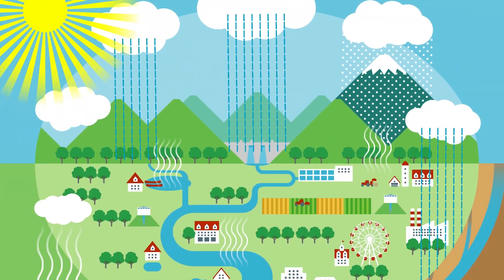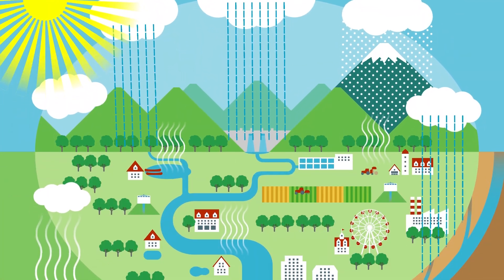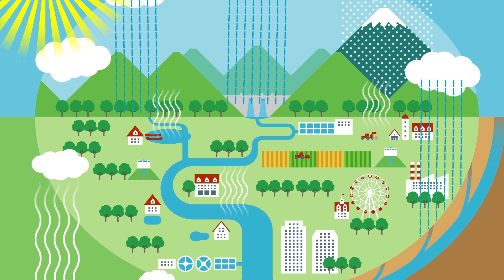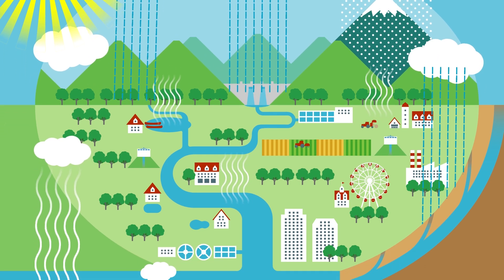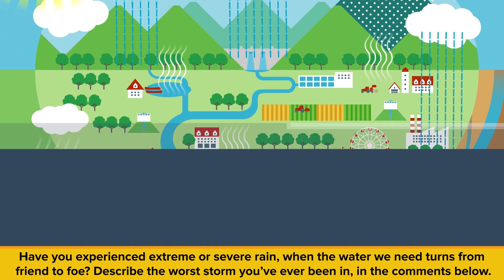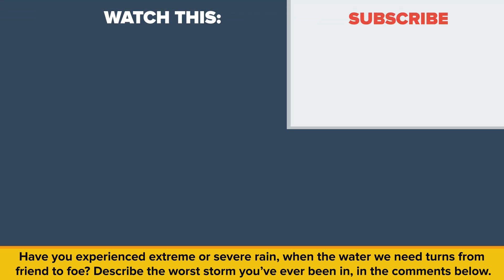So that's the process of clouds forming. Clouds cool the earth's surface by reflecting sunlight, and they supply water that is essential for the survival of plants, animals, and us humans. Have you ever experienced extreme or severe rain when the water we need turns from friend to foe? Describe the worst storm you've ever been in in the comments below.